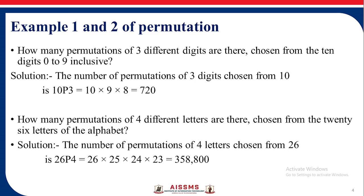Next example: How many permutations of four different letters are there chosen from 26 letters of the alphabet? The number of permutations of four letters chosen from 26 is 26P4. So 26 factorial upon (26 minus 4) factorial = 26 into 25 into 24 into 23 = 358800.